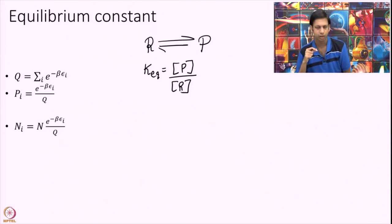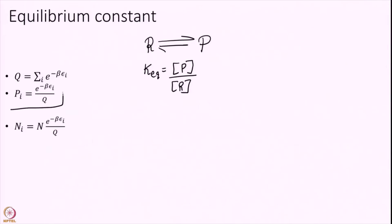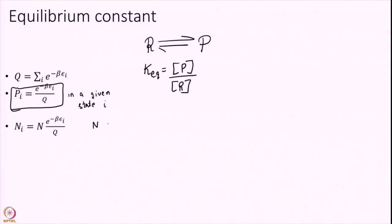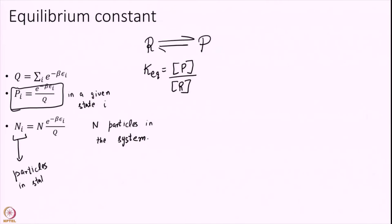The probability of being in a given quantum state is given by this formula, as discussed in the last module. The population in a given state i is e to the power of minus β·Eᵢ over q. So if I have N particles total in a system, then the total number of particles in state i, which we call Nᵢ, is simply the total number of atoms times the probability of being in that state.